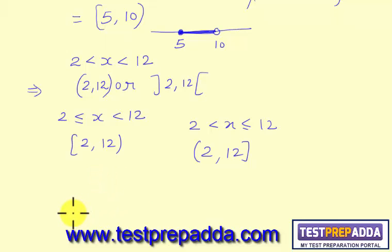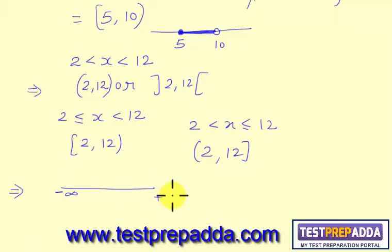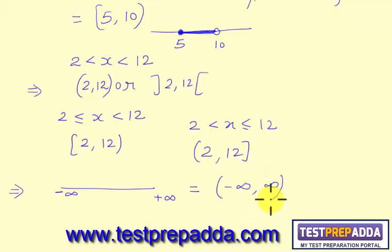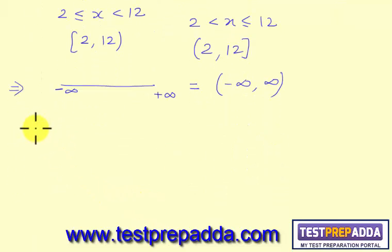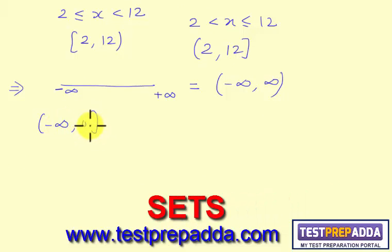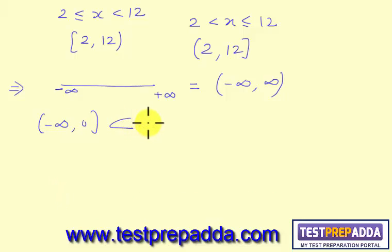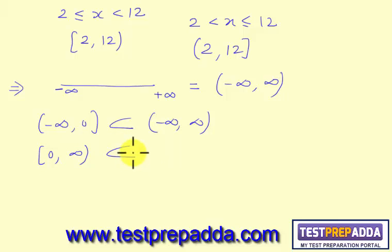Now, if you want to write all real numbers in interval form, it is minus infinity to plus infinity, and we write that as open interval minus infinity to infinity — open interval on both sides. You can also say minus infinity to 0 is a subset of real numbers, and similarly 0 to infinity is a subset of real numbers.